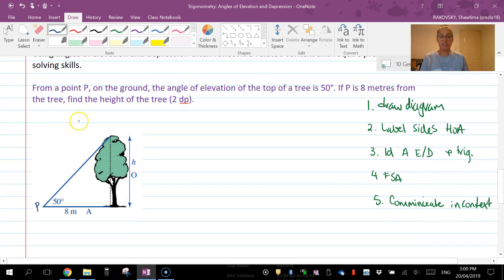So here's my question. I'm going to read through it, find my important information, work out what my question's asking me to do. From point P on the ground, angle of elevation of the top of the tree is 50 degrees. If P is 8 meters from the tree, then find the height to two decimal places.